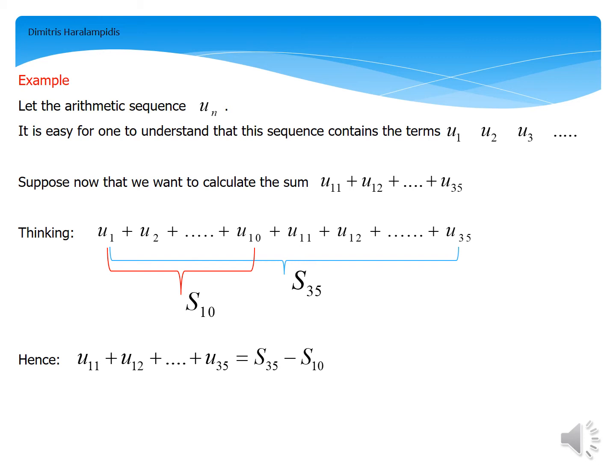Suppose now that we want to calculate the sum from u_11 to u_35. In other words, we want to find the sum of u_11 plus u_12 plus u_13 and so on until we get to u_35.